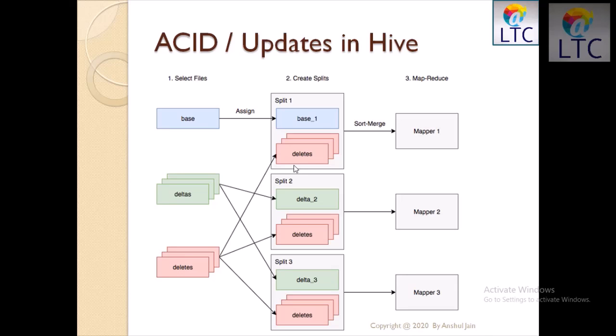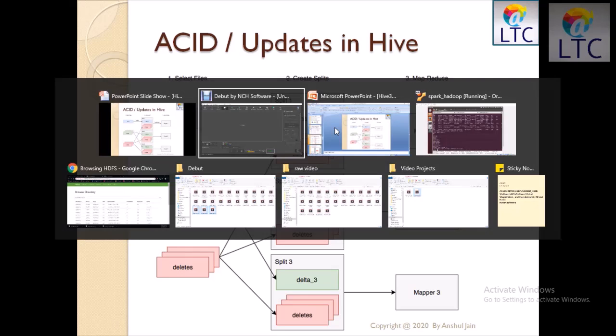Hive has one more property about compaction. What it does is periodically merge these delta files and create a single file. When we run a select query on the table, it shows us the latest data. That was the background working of Hive. Let's do the practical.